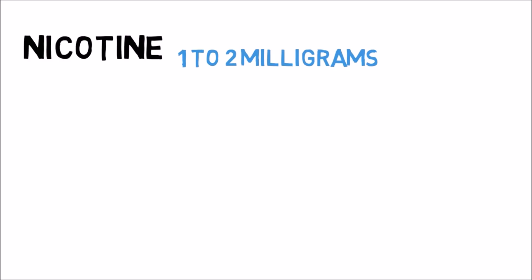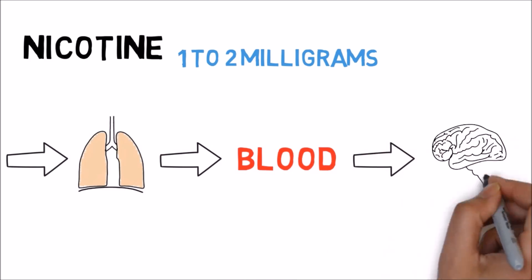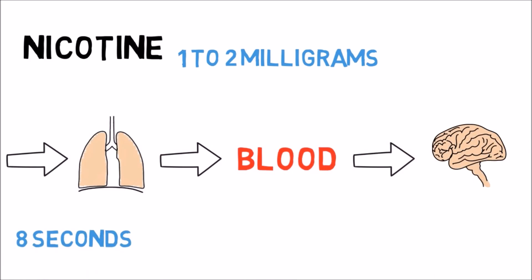When someone inhales a cigarette, the nicotine shoots into the lungs, is quickly absorbed into the blood, and is hitting the brain about 8 seconds after the puff. Overall, a single cigarette has about 10mg of the drug, but some of it goes up in smoke and is not inhaled.